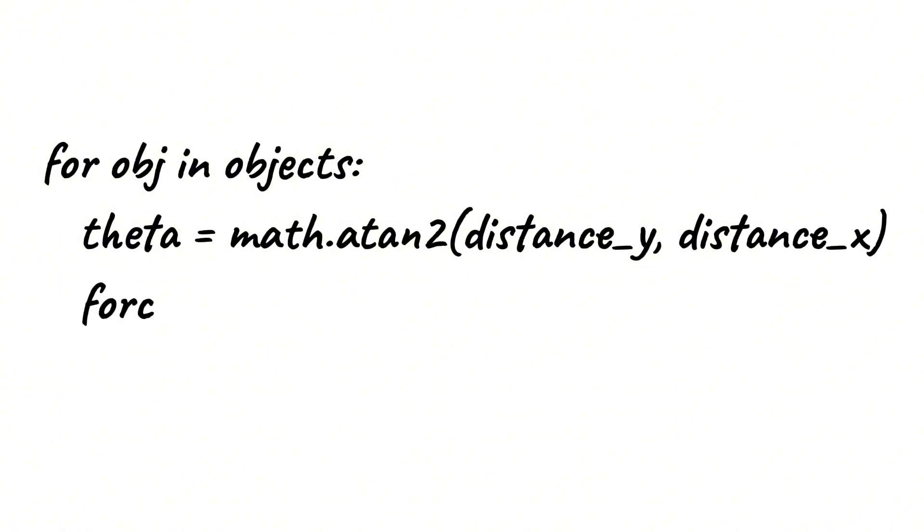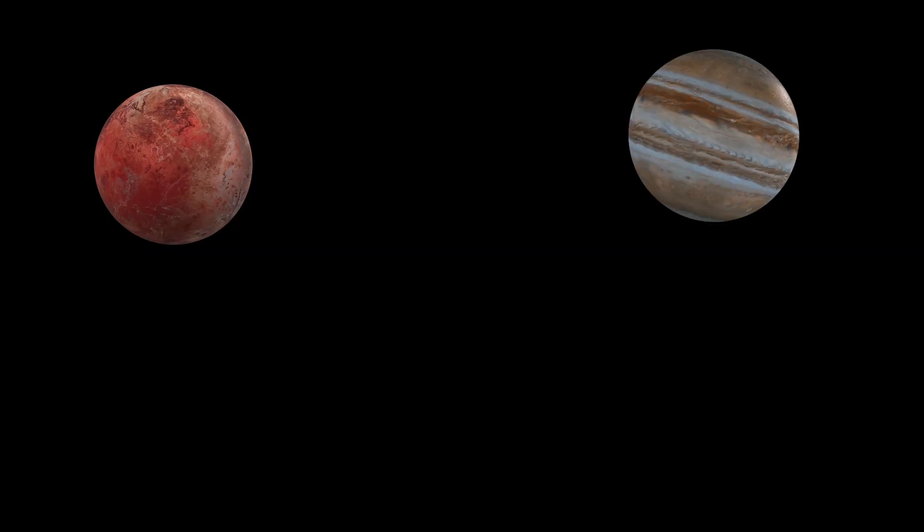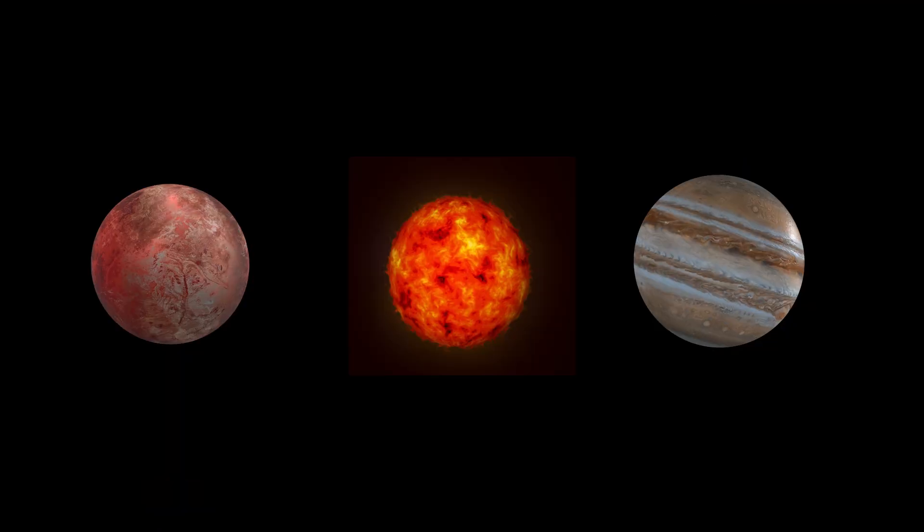Now, to actually code this, I need to make it so that every object calculates the force of attraction to every other object, create three bodies, give them some starting velocities and we're done. And this is a three-body problem.